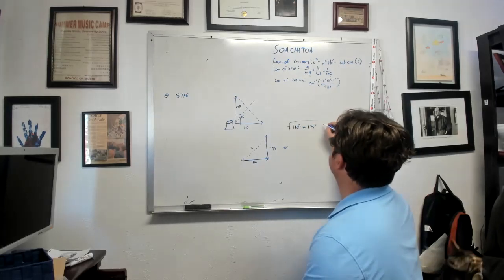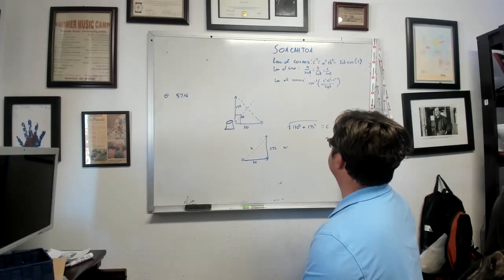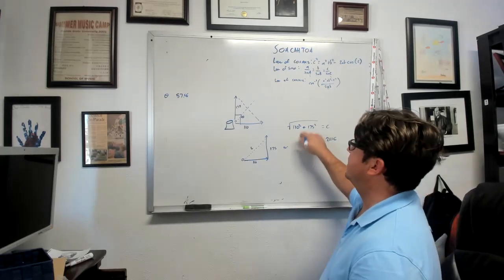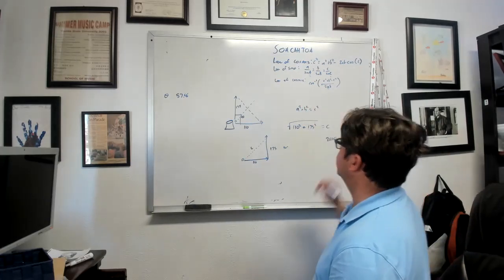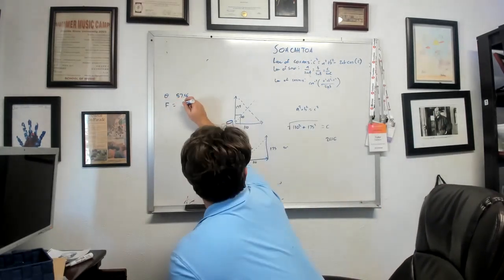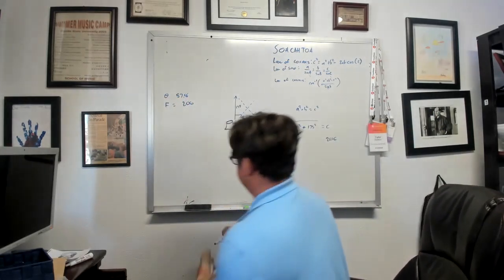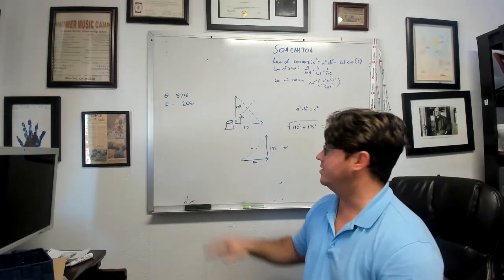The square root of that will give us c, which is 206. This is just Pythagorean theorem. A squared plus b squared equals c squared. So we can say force equals 206. So if that matches the answers that you got earlier, then you know you're on the right track.